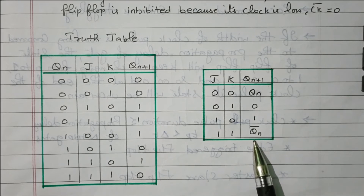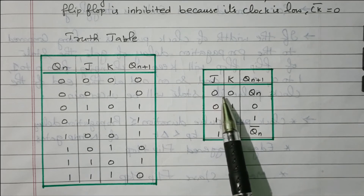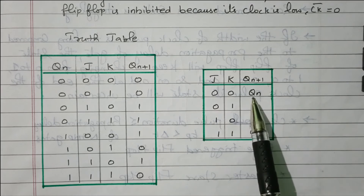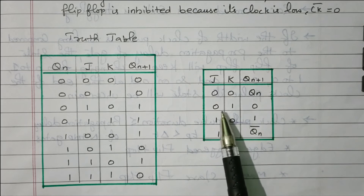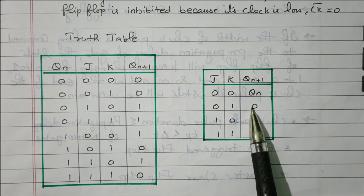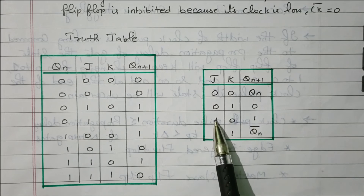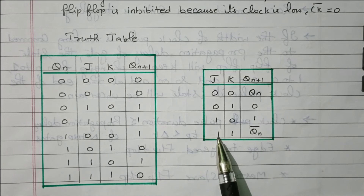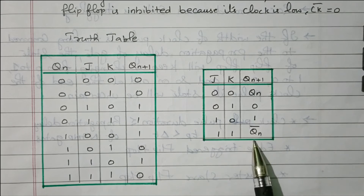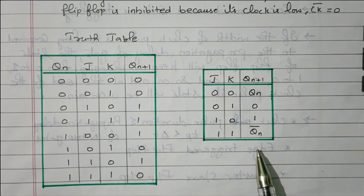This is the truth table of the JK flip-flop. Both inputs 0: no change, QN+1 equals QN. J=0, K=1: next state is 0 (Reset). J=1, K=0: next state is 1 (Set). J=1, K=1: Toggle — QN-bar.